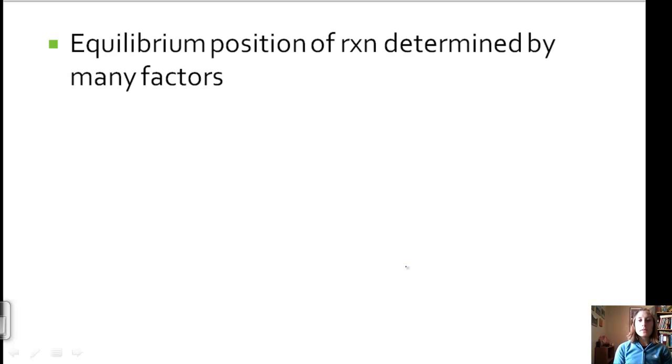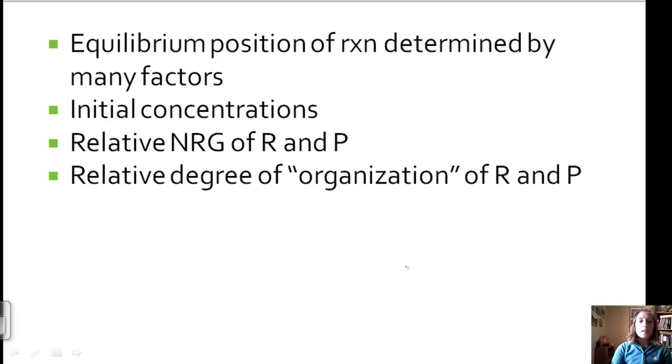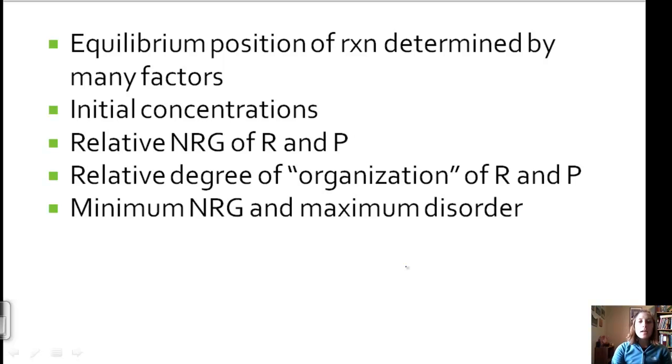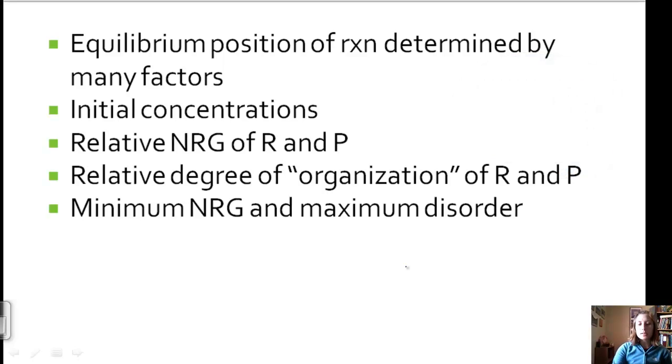The position of equilibrium of a reaction can be determined by many factors. And this goes back to some stuff that we talked about in Chapter 12. The initial concentrations are going to affect the equilibrium position. The relative energy of the reactants and the products, how fast are they moving, things like that. And the relative degree of organization. We have to have these collisions in order to have reactions go to products and products go to reactants. These last two, the relative energy and the degree of organization, are based on the fact that the universe and the system wants a minimum amount of energy and maximum disorder. We'll talk about that more later, but that's the reason for those two.